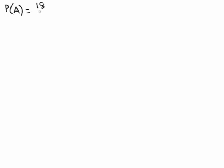Let's start by first determining all of the probabilities that we need in order to assess pairwise independence. The probability of event A — that is, of getting a red number appearing — well there are 18 red numbers out of the 36 possible numbers, so the probability of A is one-half.